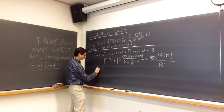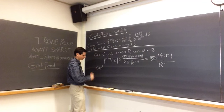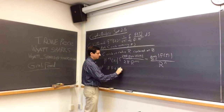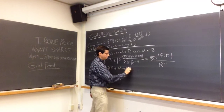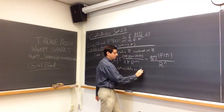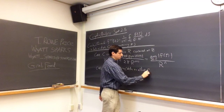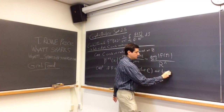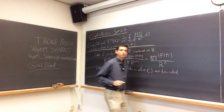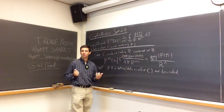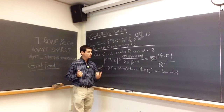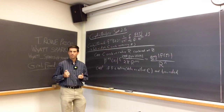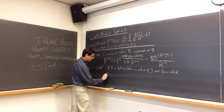As a nice corollary of the corollary — corollary squared — if f is entire, meaning defined on all of ℂ and bounded, then we can finally prove one of our shocking results from day one of the course. What do you think the result will be if f is entire and bounded? Then f is constant.